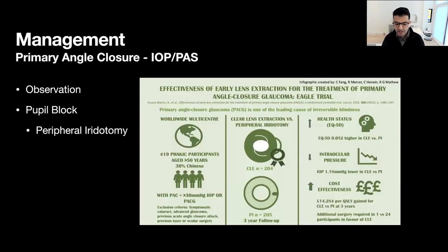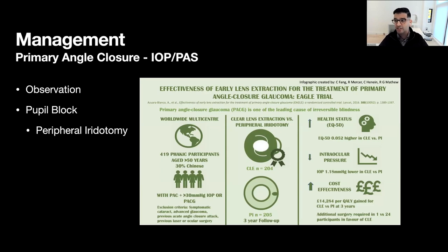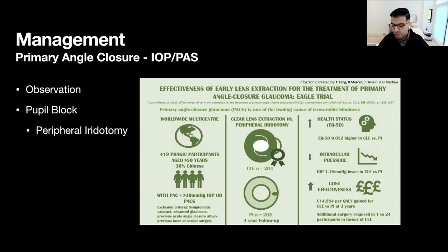Let's move on to level two — primary angle closure patients. These patients have closed angles with either increased IOP greater than 21 mmHg or some signs of scarring in the form of posterior anterior synechiae. Here is really where the art of medicine comes into play. Observation is still an option, but I think most of us would probably be willing to offer some sort of treatment given the higher risk of progression to true glaucomatous damage. For patients with pupil block that are primary angle closure, I'm pretty likely to recommend laser peripheral iridotomy as a great initial management plan.